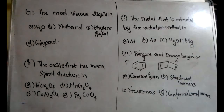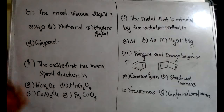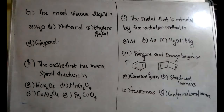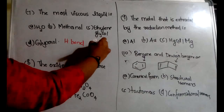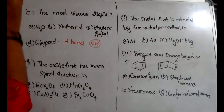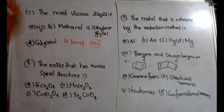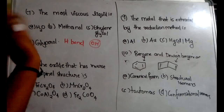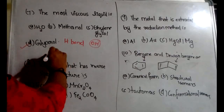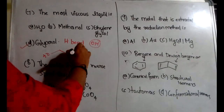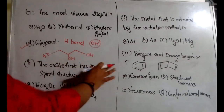The seventh question asks for the most viscous liquid among water, methanol, ethylene glycol, and glycerol. Viscosity is related to hydrogen bonding, specifically the number of OH groups. The compound with the maximum number of OH groups forms the most hydrogen bonds and is most viscous. Glycerol has three OH groups, making it the most viscous liquid. Option D is correct.